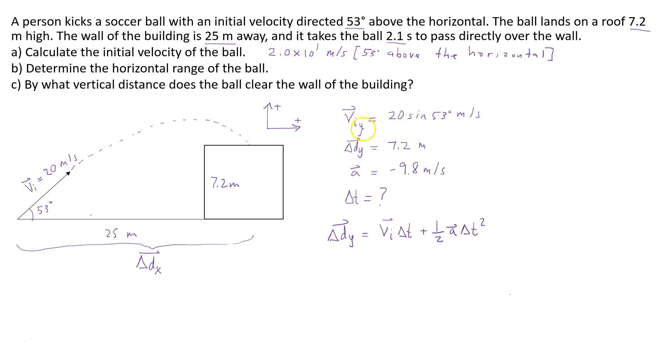So now substituting in the values. So it's 7.2 for the vertical displacement. 20 sine 53 for the vertical velocity. Delta t